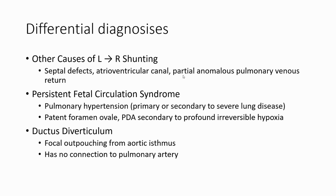Differential diagnosis includes all causes of left-to-right shunt such as ASD, atrioventricular canal, and partial anomalous pulmonary venous return. Also, persistent fetal circulation syndrome related to pulmonary hypertension, patent foramen ovale, and PDA can lead to profound irreversible hypoxia. Coarctation of the aortic isthmus has no connection to the pulmonary artery.